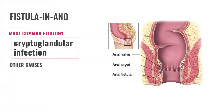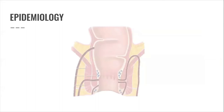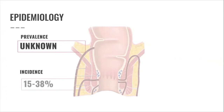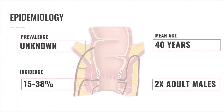Other causes also exist. For the epidemiology, the true prevalence of anal fistula is unknown. The incidence is 15–38%, the mean age is 40 years old, and adult males are 2 times more affected than females.